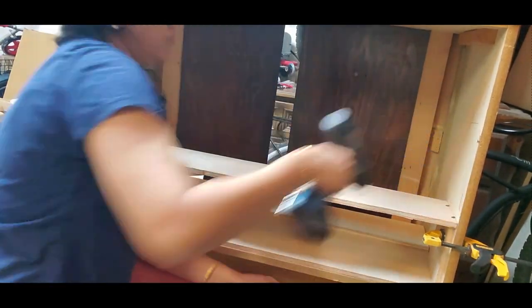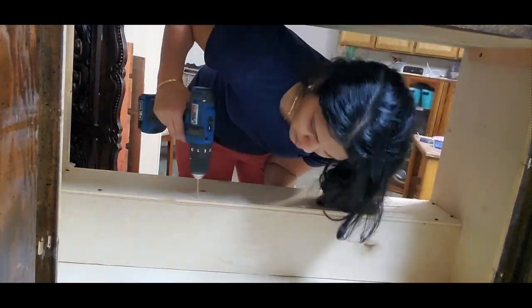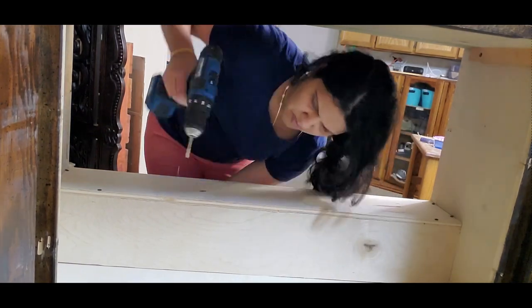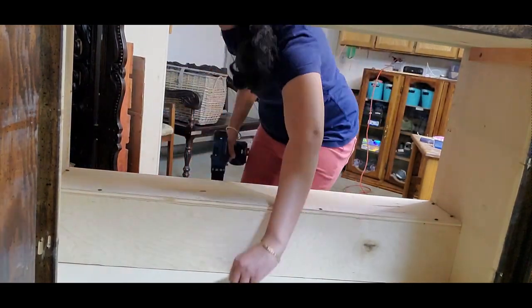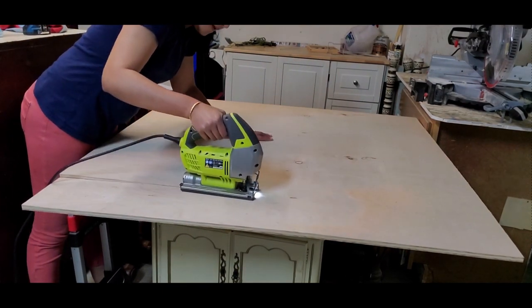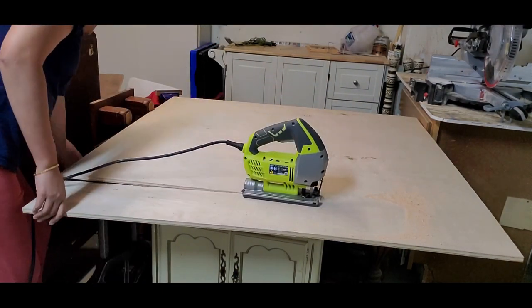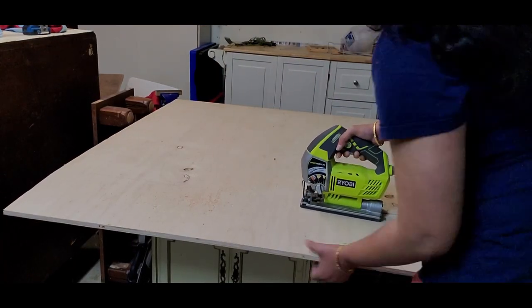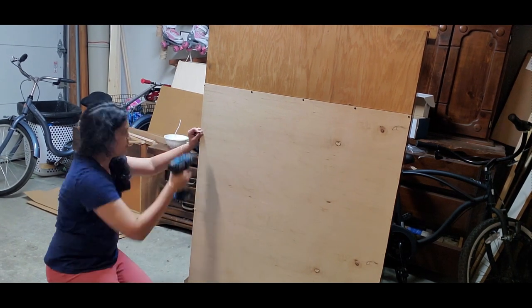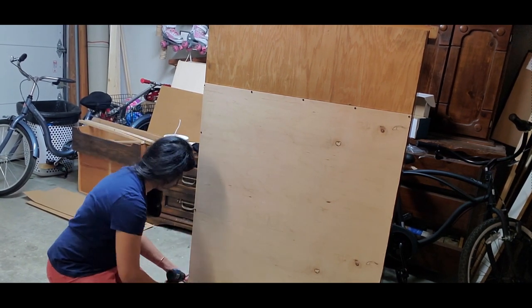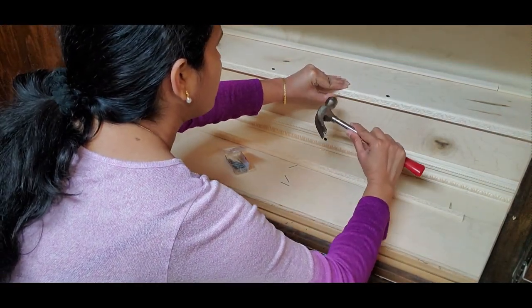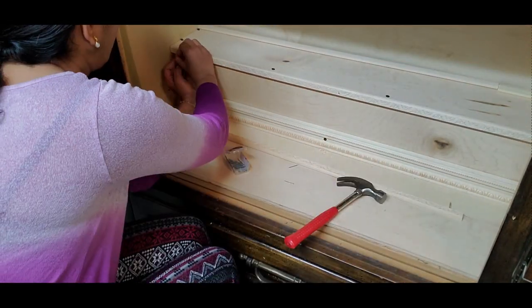I have also attached a plywood in front to make a step-like structure. Once the step is completed, I will attach some decorative trims to give a finished and elegant look. Now it is time to cover the back. I have cut the plywood to the needed measurement and attached to the back side of the cabinet using screws. Now adding some trims on the steps to give a finished and an elegant look.